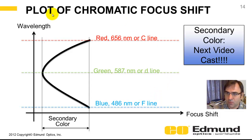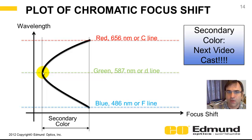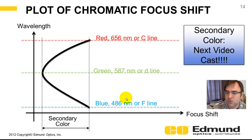How do we look at color? If you plot focus versus wavelength, you get the chromatic focal shift. On the vertical axis we have wavelength; on the horizontal, focus shift. You can see blue and red come to a common focus, while green is out at some other focus. The distance between those two — from green to the common blue-red focus — is referred to as secondary color. In the next optics lecture I'll go into how to compute it, what it means, and how to minimize it.